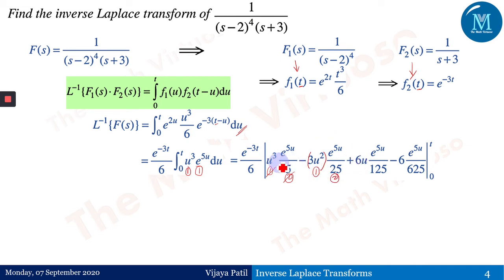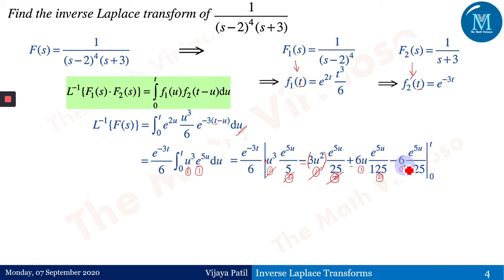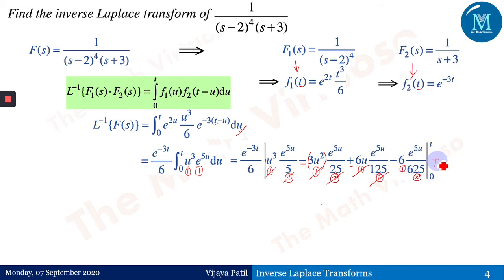Continuing the musical chair integration by parts: 3u²·e^(5u)/25 minus 6u·e^(5u)/25; integration of e^(5u)/25 gives e^(5u)/125. Then 6u·e^(5u)/125 minus 6·e^(5u)/125; integration of e^(5u)/125 gives e^(5u)/625. Differentiating 6 gives 0, so all further terms vanish.